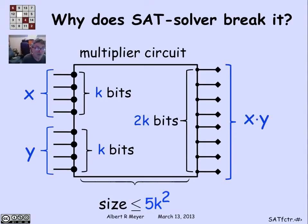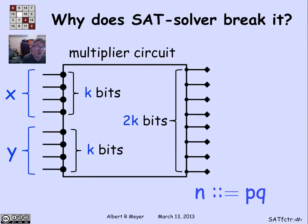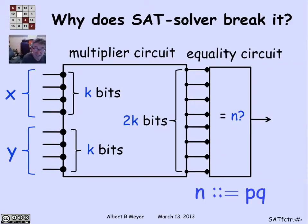Suppose that I have a way to test satisfiability of circuits. How am I going to use this multiplier circuit to factor? The number I'm factoring is n, and it's the product of 2 primes p and q — those are the kinds of n's used in RSA. It's also very easy to design an equality tester: a little digital circuit that has 2k input lines and produces a 1 on its output line precisely when the input is the binary representation of n, and 0 otherwise. We put those two together and watch what happens.